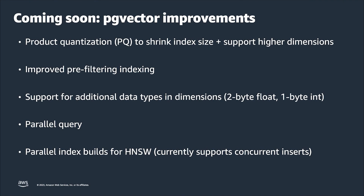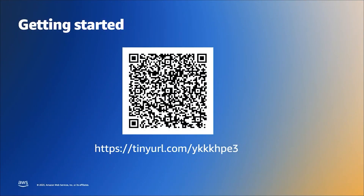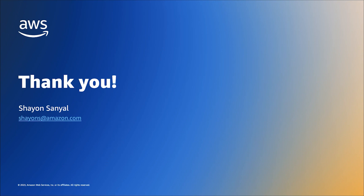There are several PG Vector improvements in the pipeline: product quantization for vector compression, improved pre-filtering indexing, support for additional data types and dimensions including 2-byte and 1-byte floats and integers, parallel query support, and parallel index builds for HNSW — which currently supports concurrent inserts. You can get started with PG Vector on our managed database services by scanning the QR code or visiting the linked website, which includes a self-serve workshop with Aurora Postgres and PG Vector. Thank you for your time and see you in the next one.